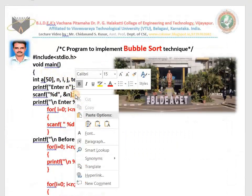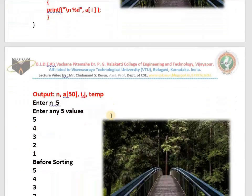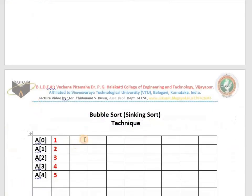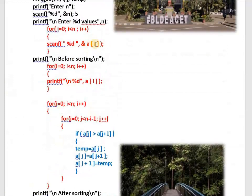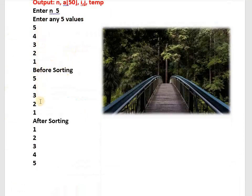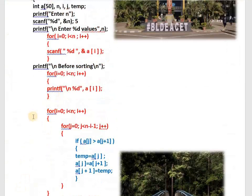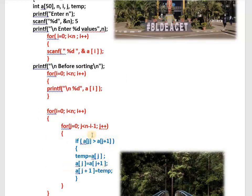Read n — assume entered value is 5. Enter 5 values; assume I entered 5, 4, 3, 2, 1. These values are stored in a[0] through a[4]. Print those values as-is before sorting. Then the very important code: if a[j] is greater than a[j+1], then temp = a[j], a[j] = a[j+1], a[j+1] = temp. How many times do we compare? n minus i minus 1 — every time one comparison is reduced.